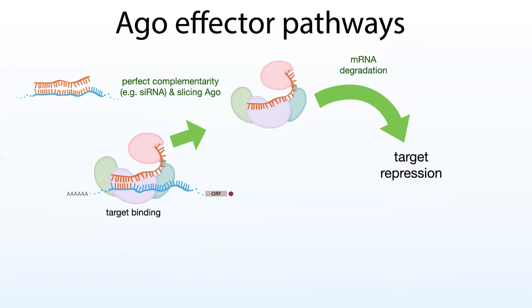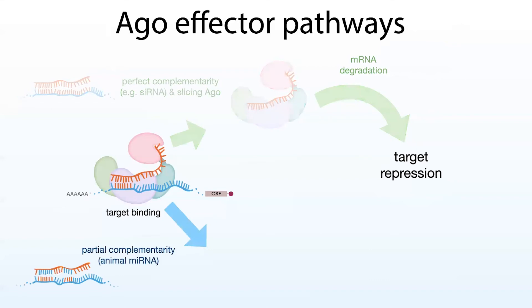That said, mammals typically don't have perfectly complementary targets. We don't use siRNAs to a great extent, at least not naturally. Instead, we rely on microRNAs regulating gene expression. When we talk about animal microRNAs, these do not have full complementarity — and importantly, they don't have complementarity in that central region where you need complementarity in order for slicing to occur. Since slicing was important for helping degrade the target, we need additional mechanisms to help explain how Ago binding to a target can repress it.